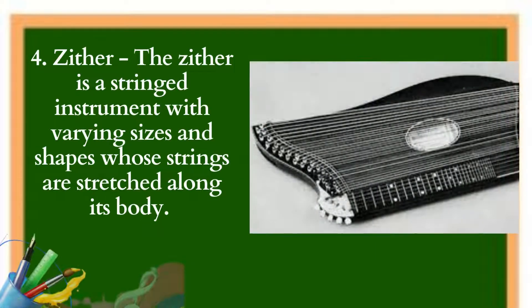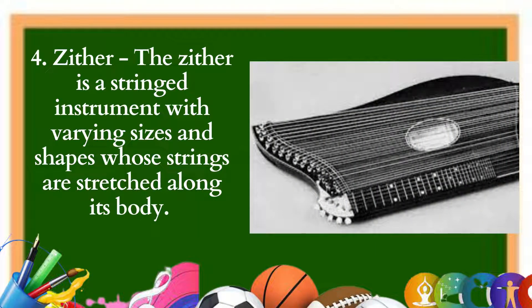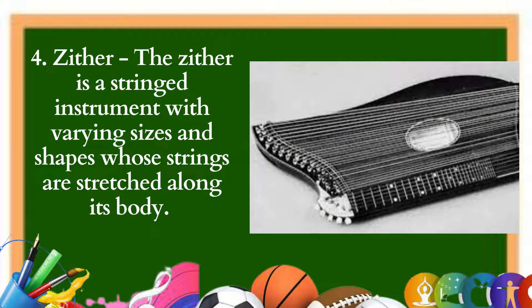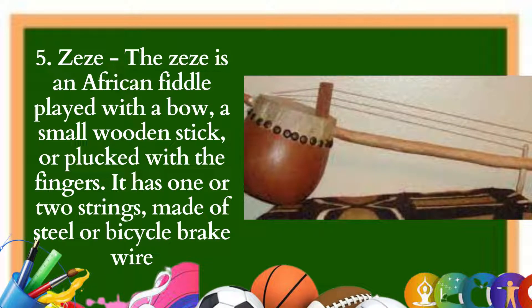4. Zither: The zither is a stringed instrument with varying sizes and shapes whose strings are stretched along its body. Among the types of African zither are the raft or anana zither from Burundi, the tubular or valaha zither from Malagasy, and the harp or mvet zither from Cameroon. 5. Zees: The zees is an African fiddle played with a bow, a small wooden stick, or plucked with the fingers. It has one or two strings made of steel or bicycle brake wire, from sub-Saharan Africa, also known as sets, zens, izes, and on Madagascar as lokanga or lokango votavo.